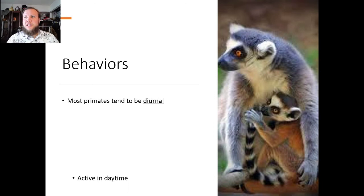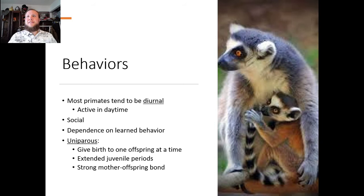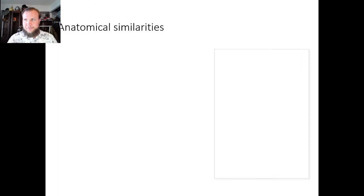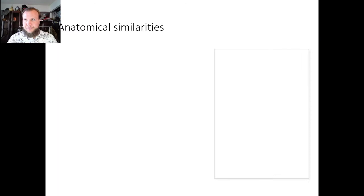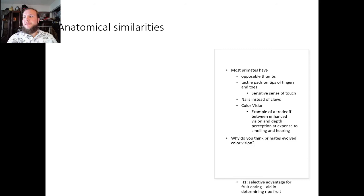Most primates are diurnal — active in the daytime. They're social, though some are not. They have a dependence on learned behavior — they're very social and learn from each other. They are uniparous, meaning they give birth to one offspring at a time in most cases, and they have extended juvenile periods with strong mother-offspring bonds, similar to why we're very attached to our children.